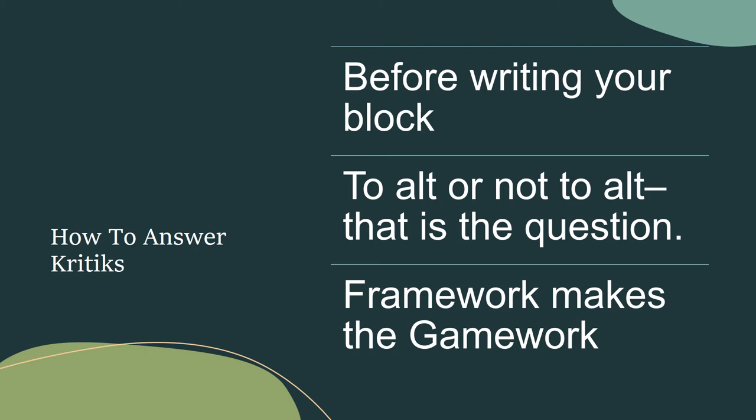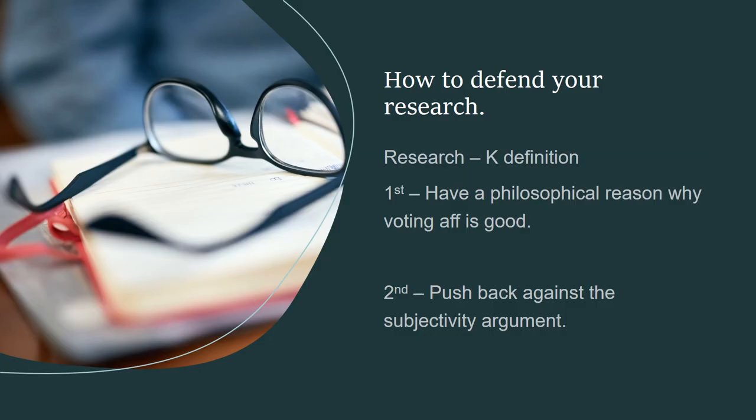Now, let's go over the typical 2AC versus criticisms. The first argument you should always make is framework. Because most negatives are more than happy to wish away any benefit the affirmative may have, it is imperative that you keep the affirmative alive. The negative says fiat is illusory, and you should say sure, but that fiat is necessary to have a productive conversation over the cost-benefits of an action — it is key to clash. Yes, we know fiat is illusory, but that doesn't mean we cannot test the ideals presented in the 1AC. Most framework arguments boil down to: weigh the affirmative. Since framework arguments are a means to evaluate which impacts matter more in debate, this is generally the best middle ground for affirmative teams. Weigh the affirmative essentially says we get to defend ourselves and don't wish away our impacts.